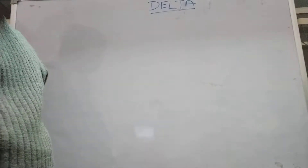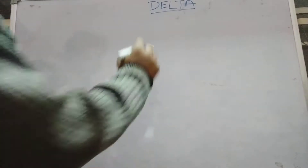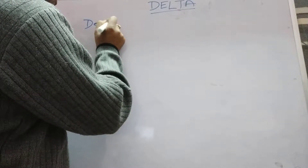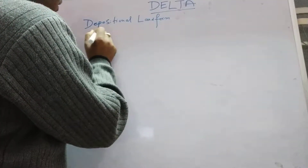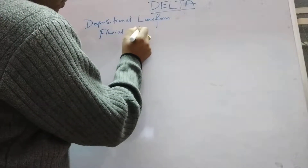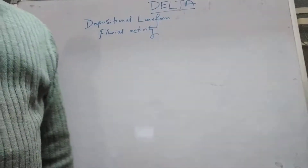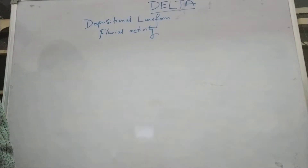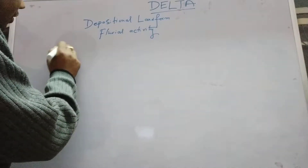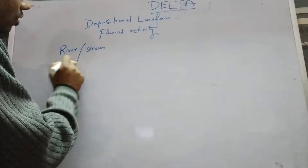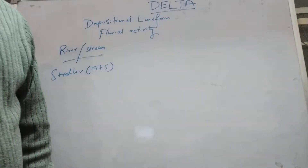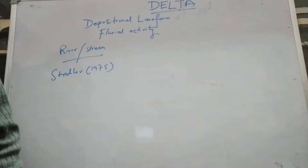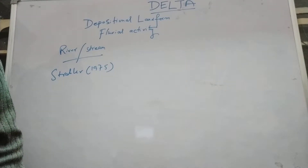Hi friends, today we are going to present one of the most important topics — the delta, which is a depositional landform by fluvial activity. If we define the delta, it is a rolling area formed at the mouth of the river due to the deposition of the alluvium carried by the river or stream. According to Stroller in 1975, delta is a deposition of sand, gravel, etc., by the stream where it flows into a body of standing water.